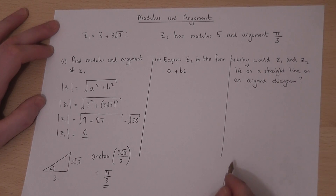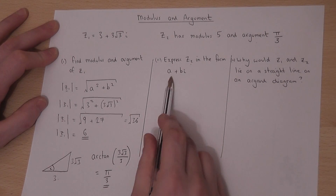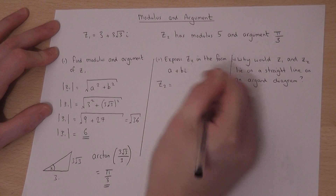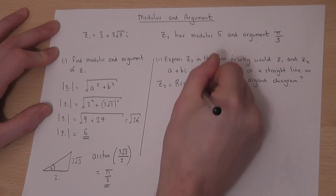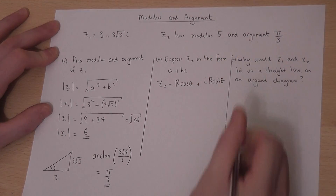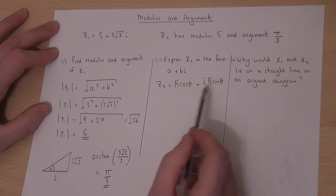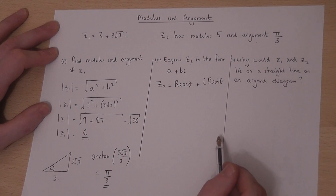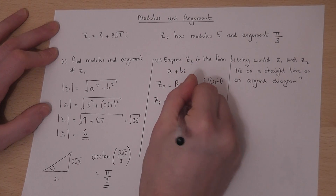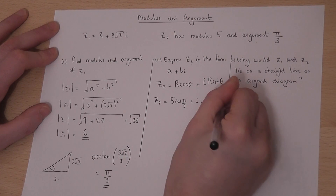In z2, we're given the modulus and the argument, and we're asked to convert back into the form a plus bi. There's a general rule for this: z2 will equal r cos(θ) plus i r sin(θ), where theta is the angle. So r is the modulus, which is 5, and theta is the angle, which is pi over 3. So z2 will equal 5 cos(pi over 3) plus i times 5 sin(pi over 3).